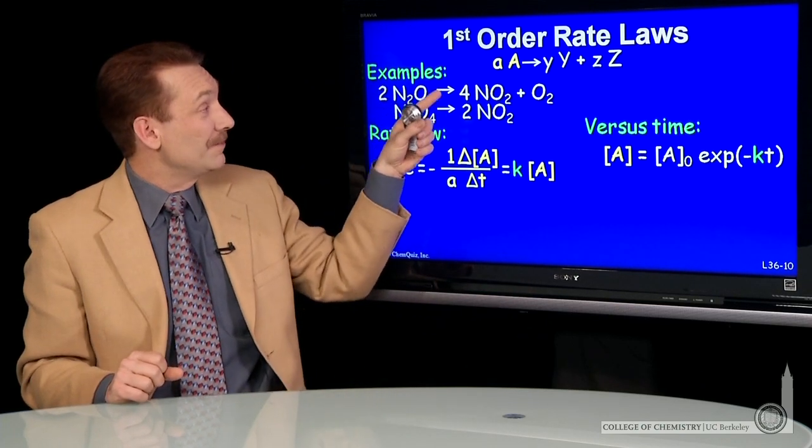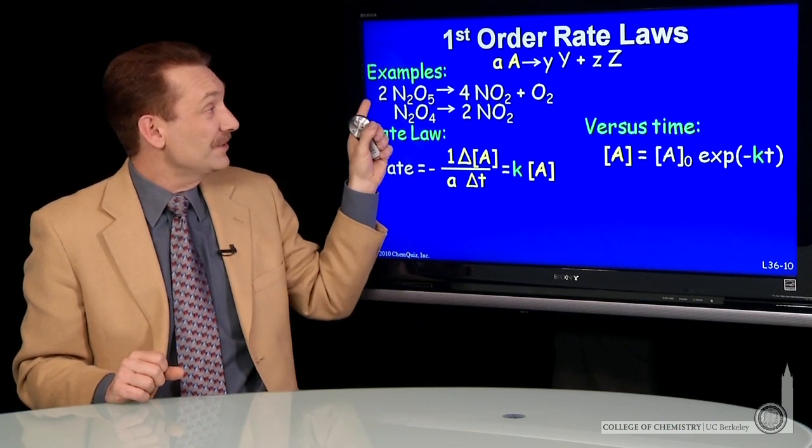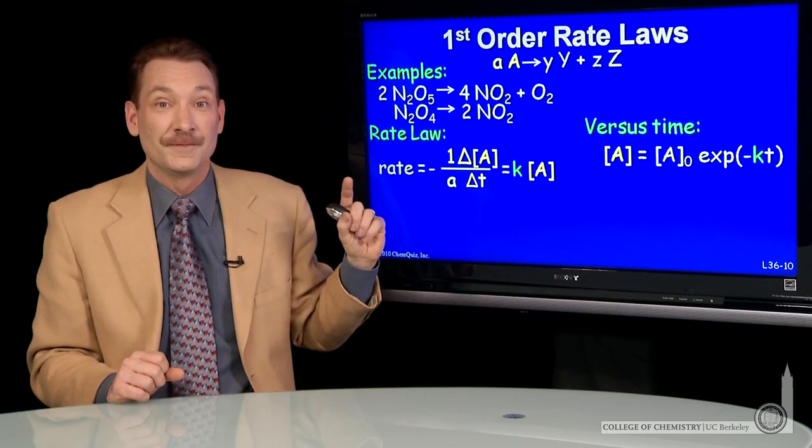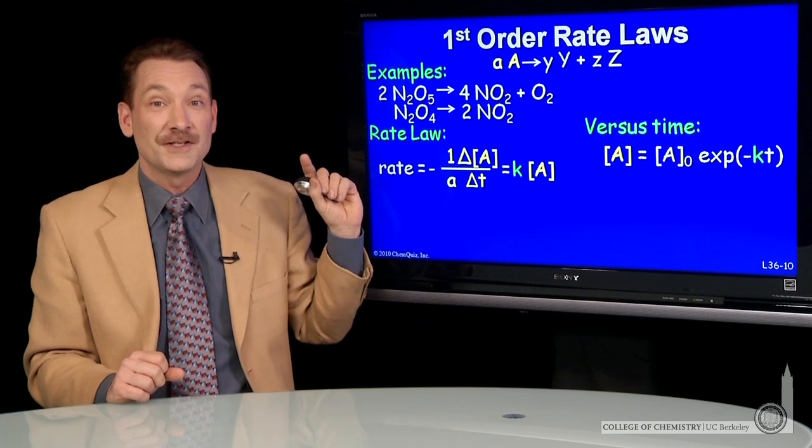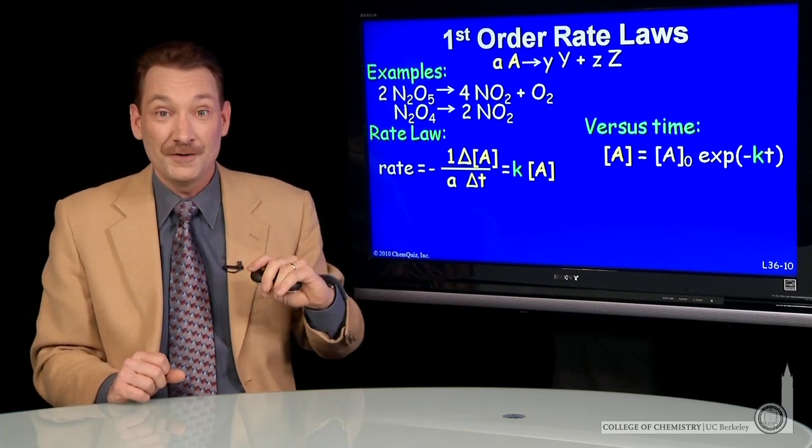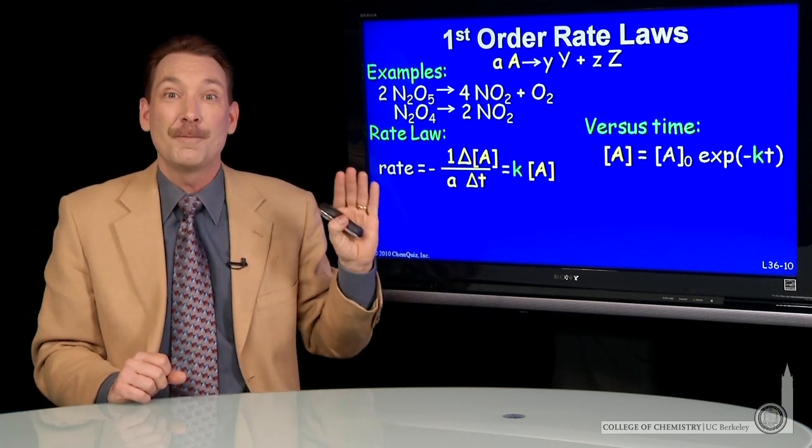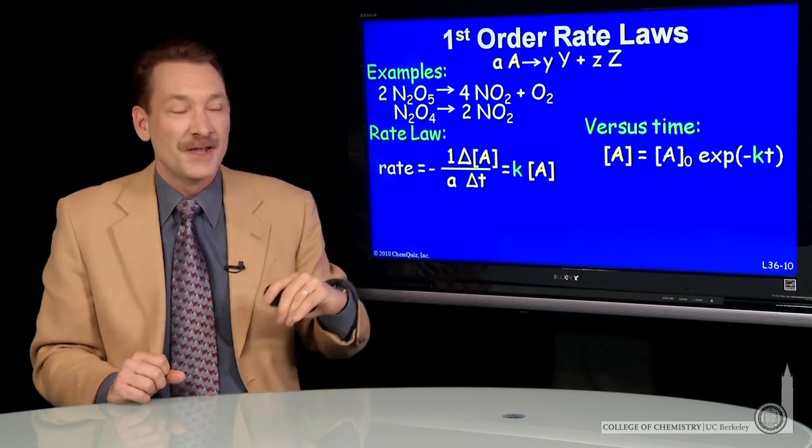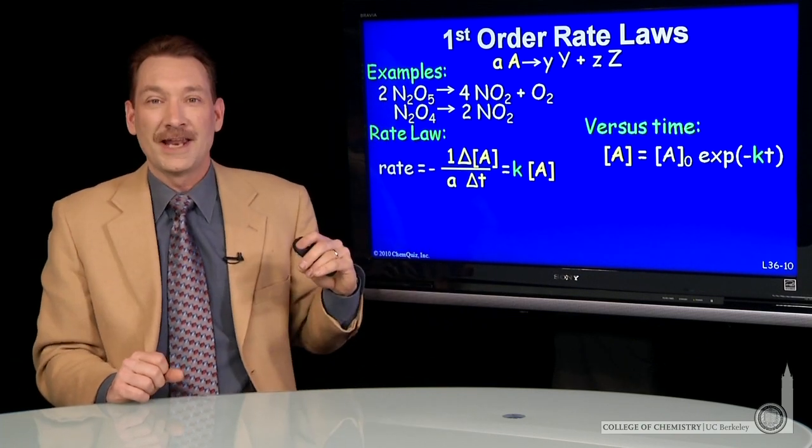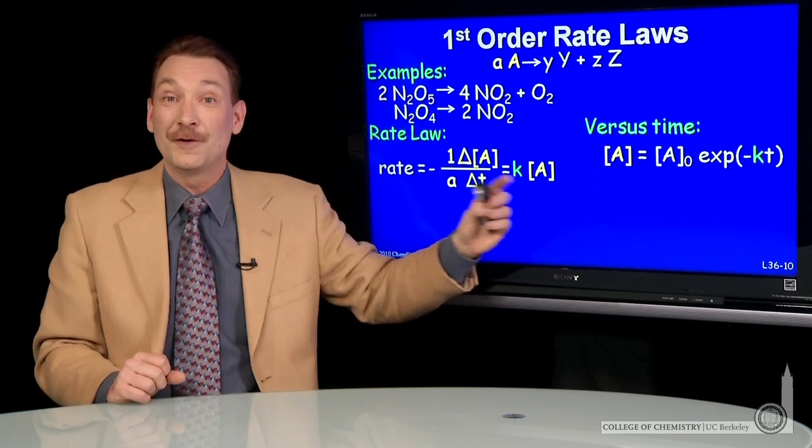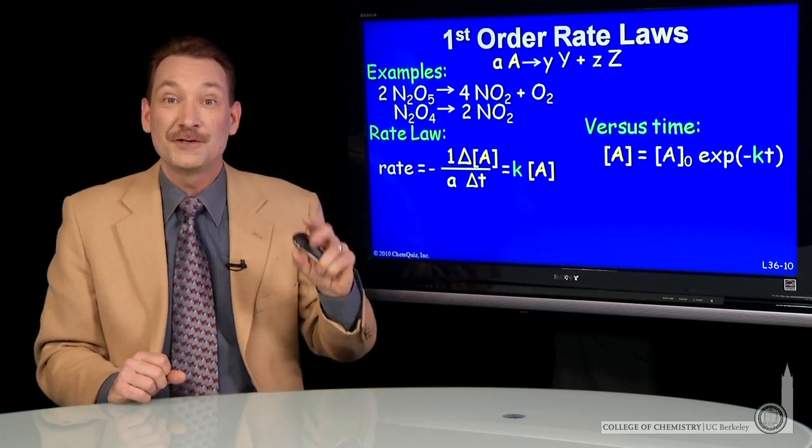And one of them here has various stoichiometric coefficients. Stoichiometric coefficients do not influence, in general, the rate law. Rate law must be determined experimentally. So you can't look at a chemical reaction and write down rate laws. You have to do an experiment.